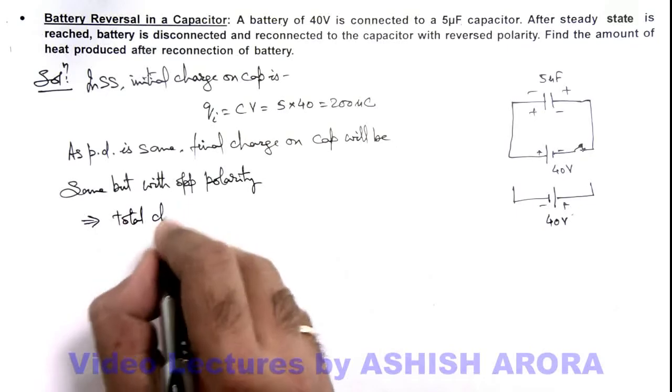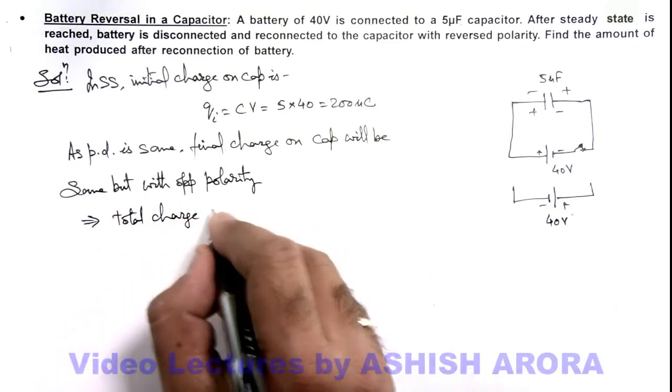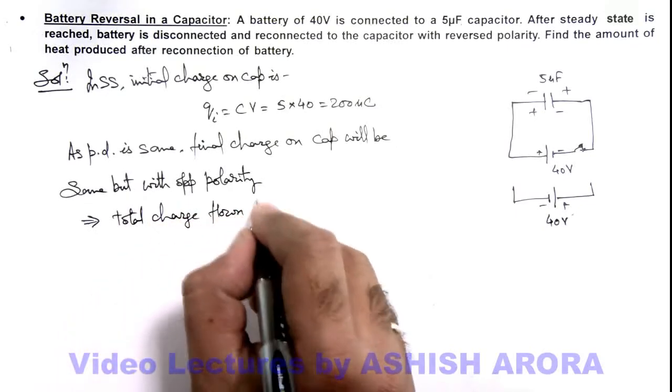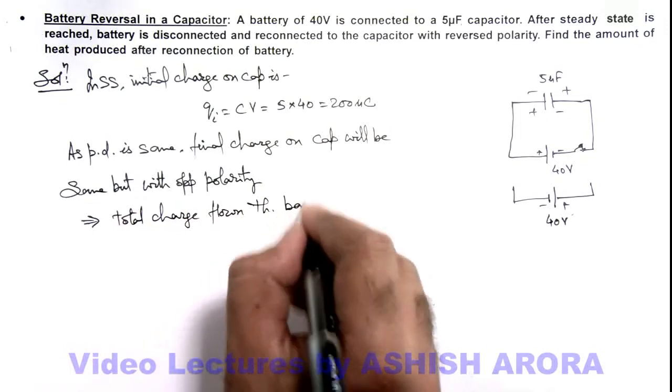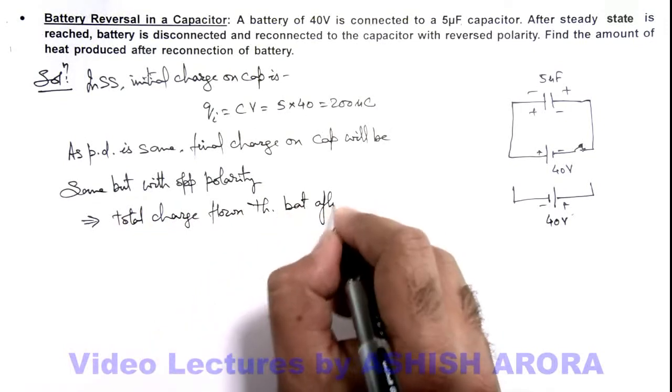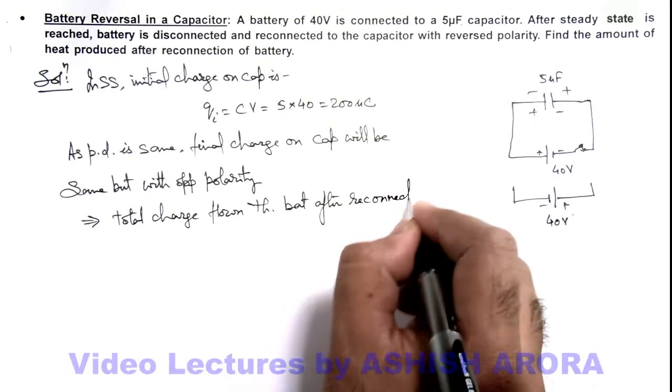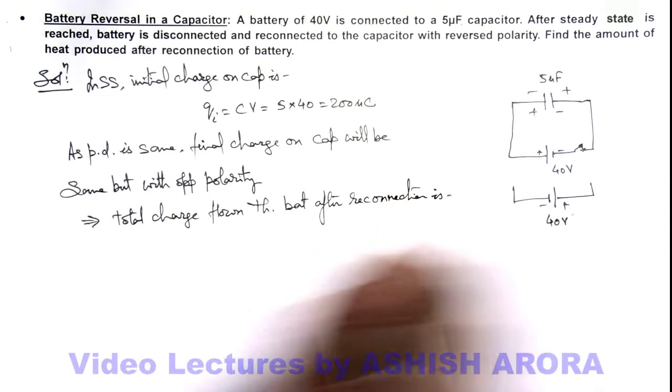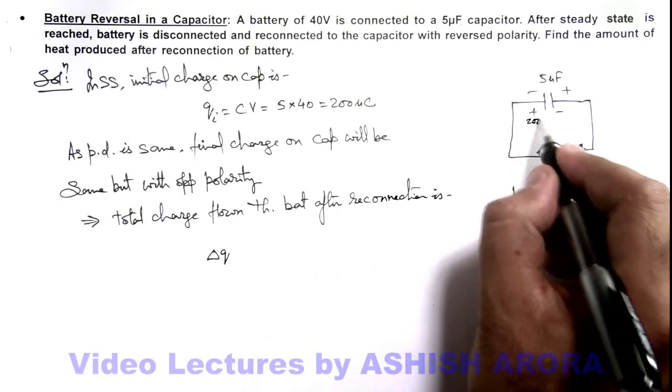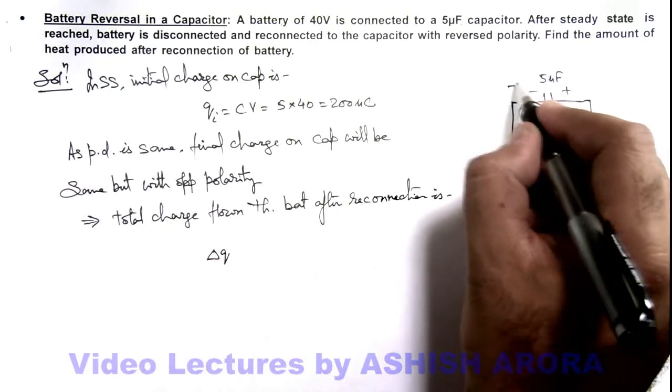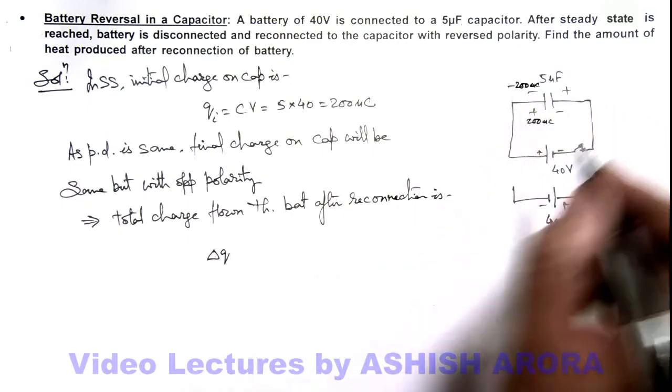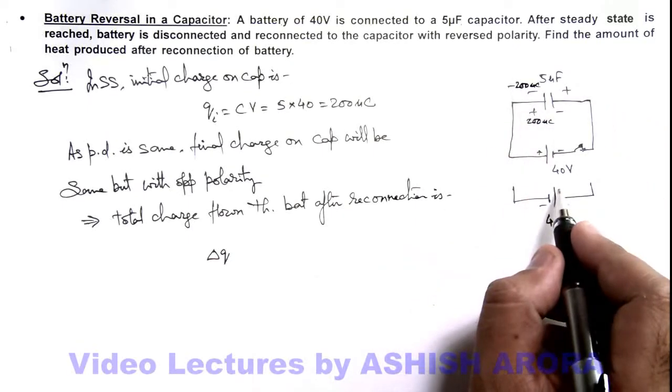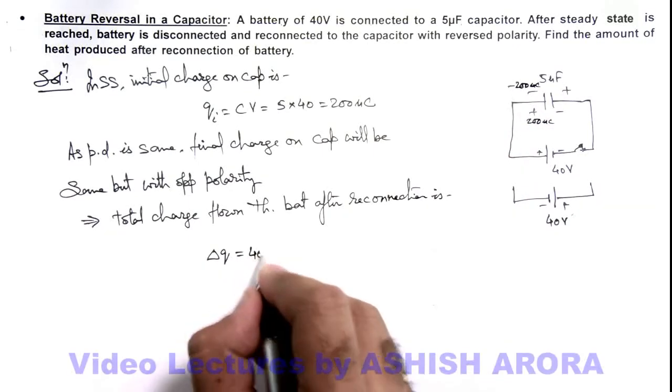This implies if we calculate the total charge flown through battery after reconnection, this can be written as delta Q. As earlier it was plus 200 microcoulomb, finally it'll become minus 200 microcoulomb. So the charge which will flow through this battery will be 400 microcoulomb.